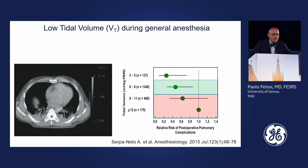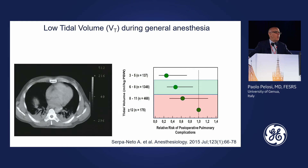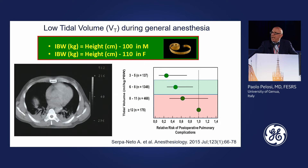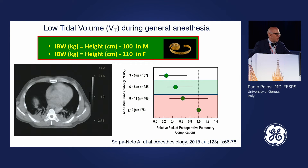Further reduction in tidal volume does not seem to bring further improvement. As also pointed out, the simplest first rule for protective ventilation is: take care of tidal volume according to ideal body weight. The formula is easy: height in centimeters minus 100 in males, and minus 110 in females.